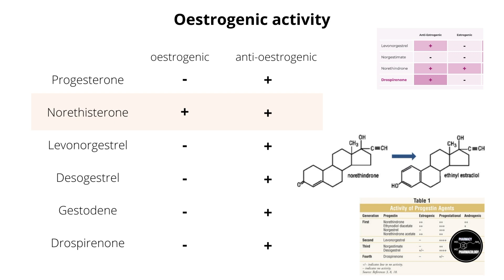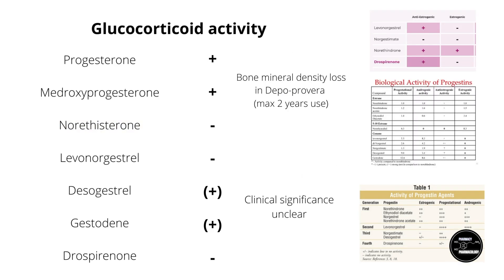Starting with estrogenic activity: all progestins have anti-estrogenic activity. Interestingly, norethisterone also has some estrogenic activity, because it is partially converted into ethinyl estradiol in the body. Progesterone has glucocorticoid activity, but most progestins don't, with the notable exception of medroxyprogesterone acetate. A couple of the third-generation progestins also have weak glucocorticoid activity, and the clinical significance of this is not really clear. Medroxyprogesterone acetate depot injections are associated with bone mineral density loss, so it could be speculated that glucocorticoid activity is a contributing factor.